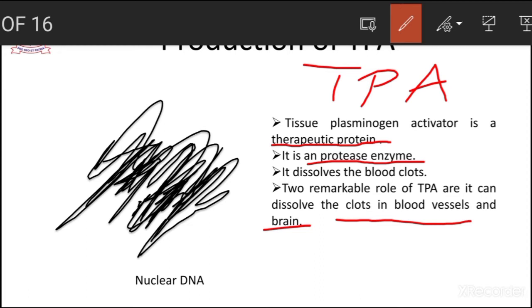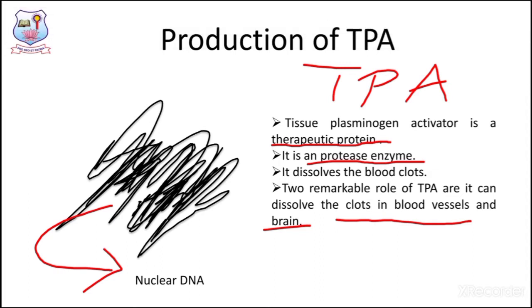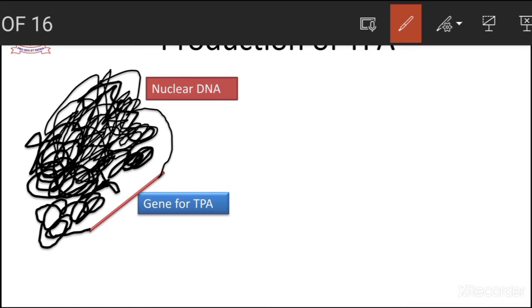This region symbolizes the nuclear DNA. Nuclear DNA is very complex in nature because it is organized in the form of chromosomes. As you know, human beings contain 23 pairs of chromosomes. Each chromosome has a different set of genes, and each gene has a specific function in a biological system. Here you can see an illustration emphasizing the complex form of DNA called chromosomal DNA.